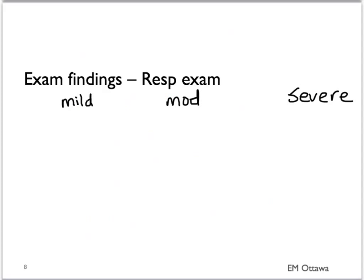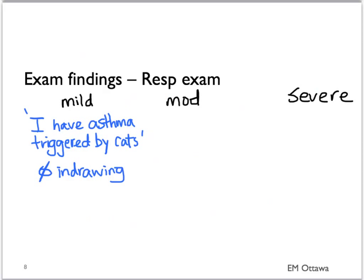Those patients should be able to talk to you in full sentences. They are tachypneic, but they should have bilateral air entry even though it might be decreased. They will have wheezes.